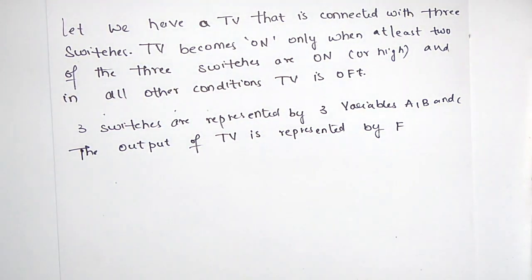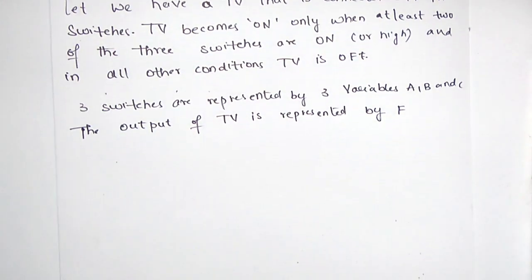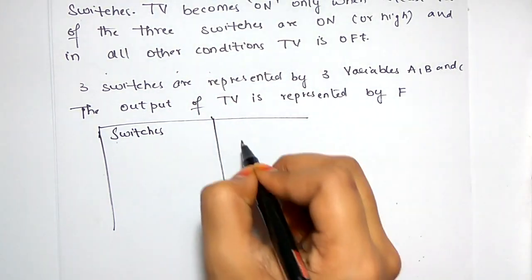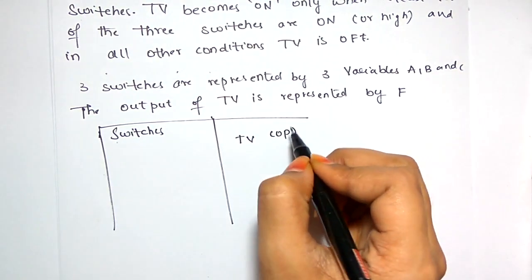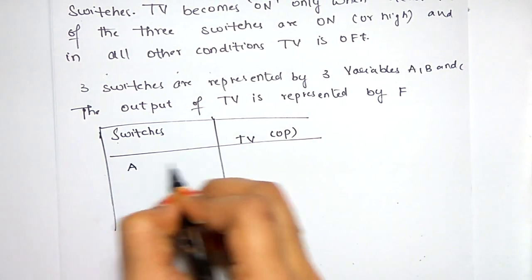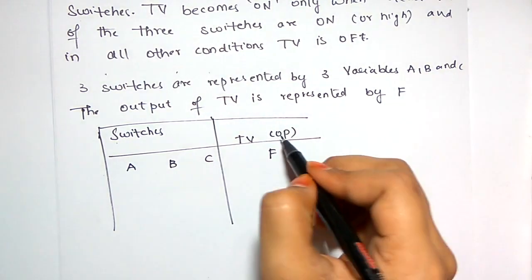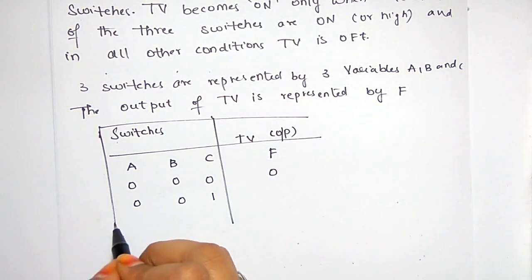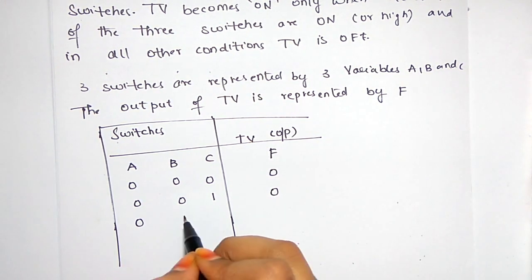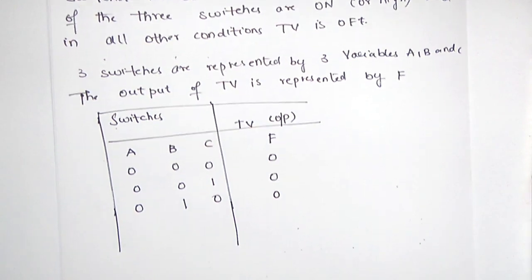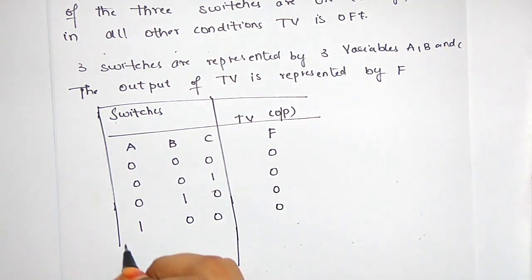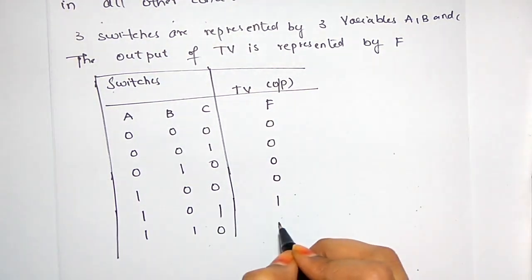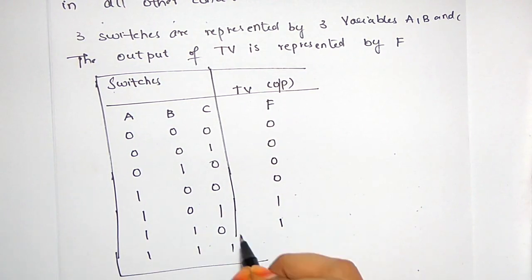Since there are three switches, there are eight distinct combinations possible, which we will see in the truth table. The switches are A, B, C and the TV output is F. When all the switches are off, the TV will be off. When only one switch is on, the TV will also be off. The TV will be on only when at least two of the switches are on. When all three switches are on, the TV will be on.